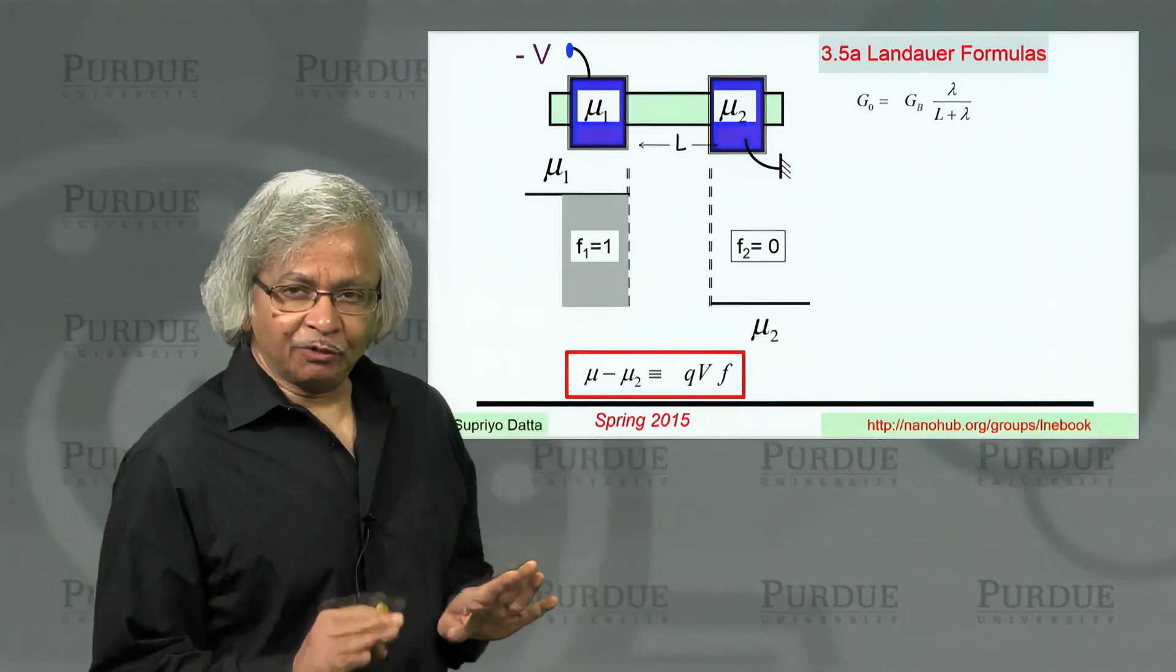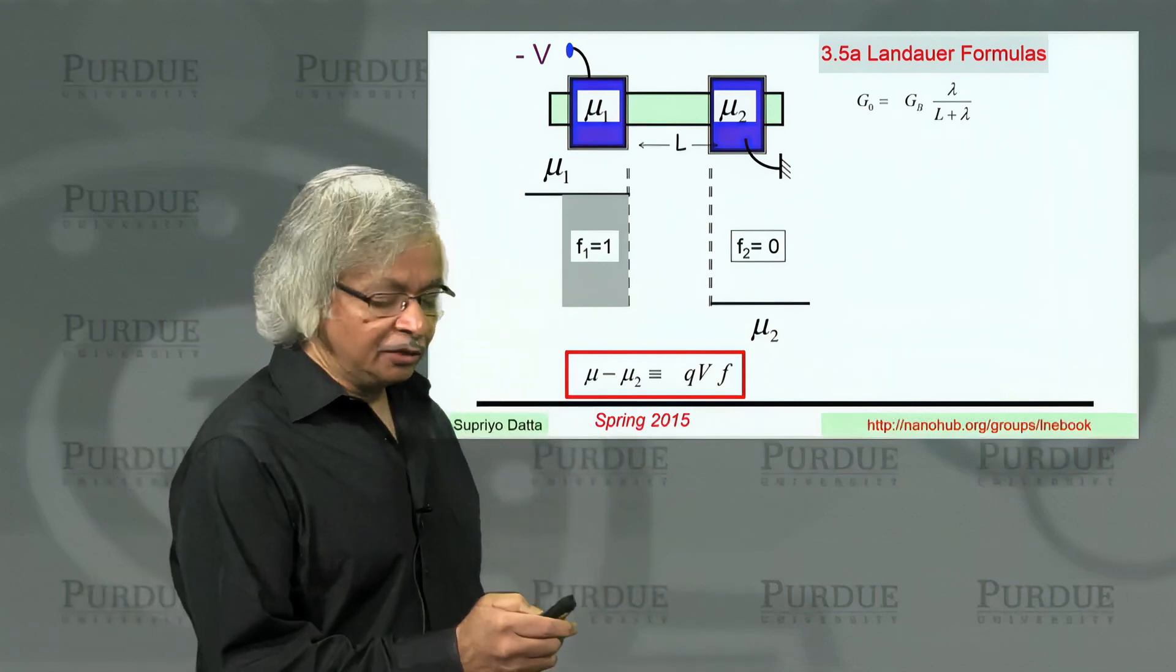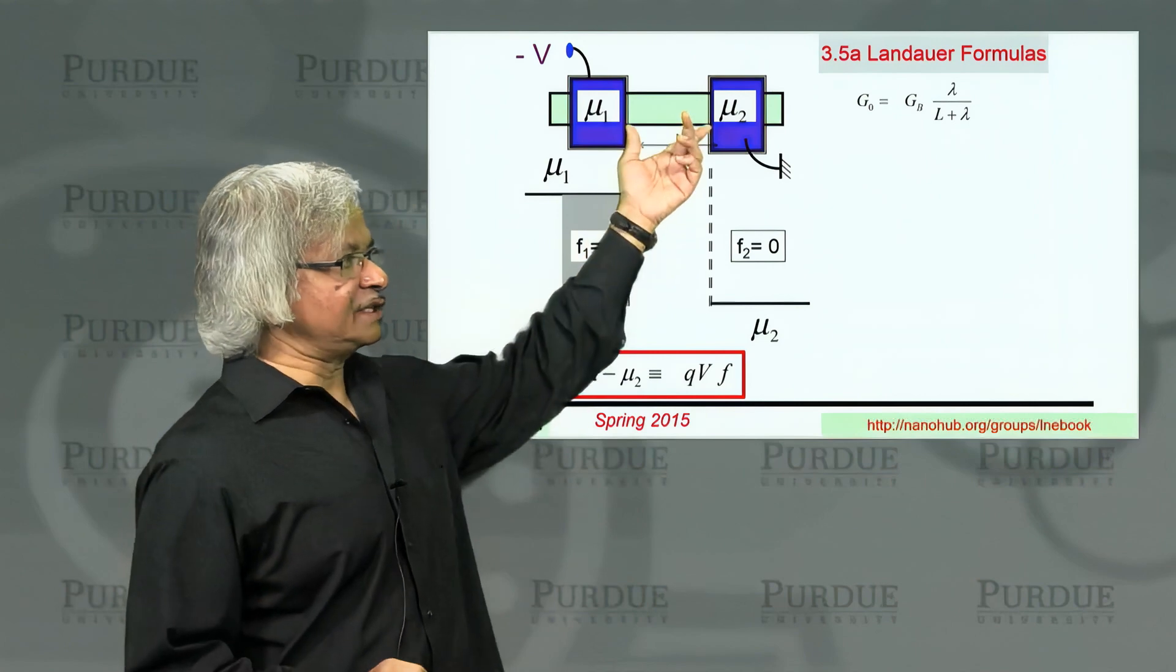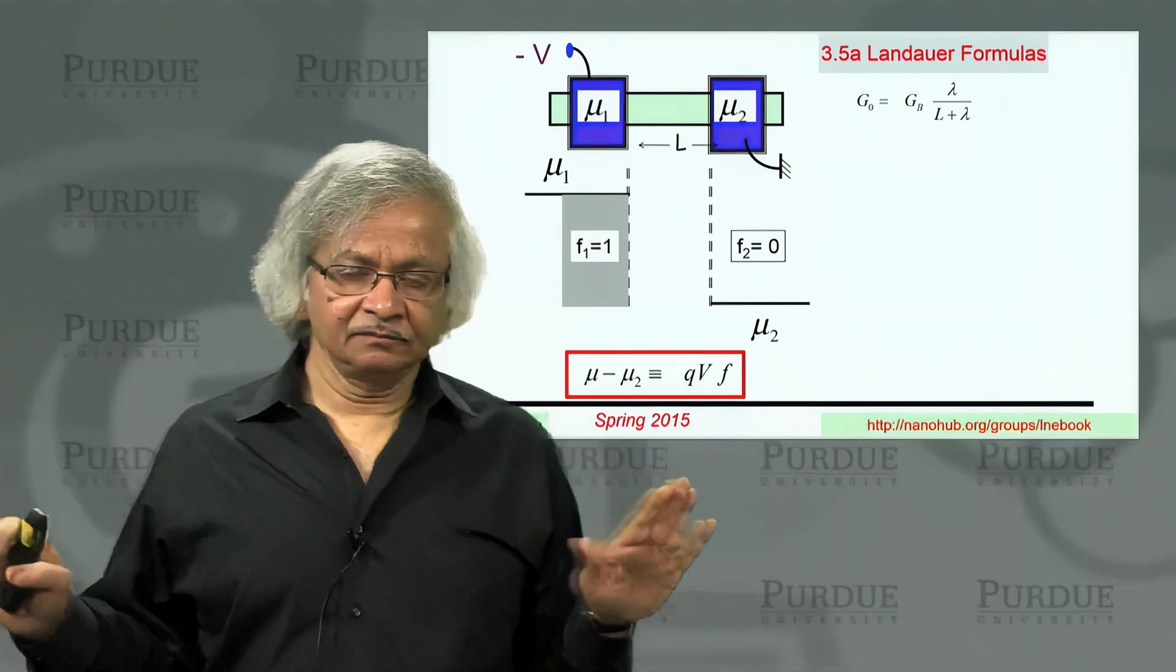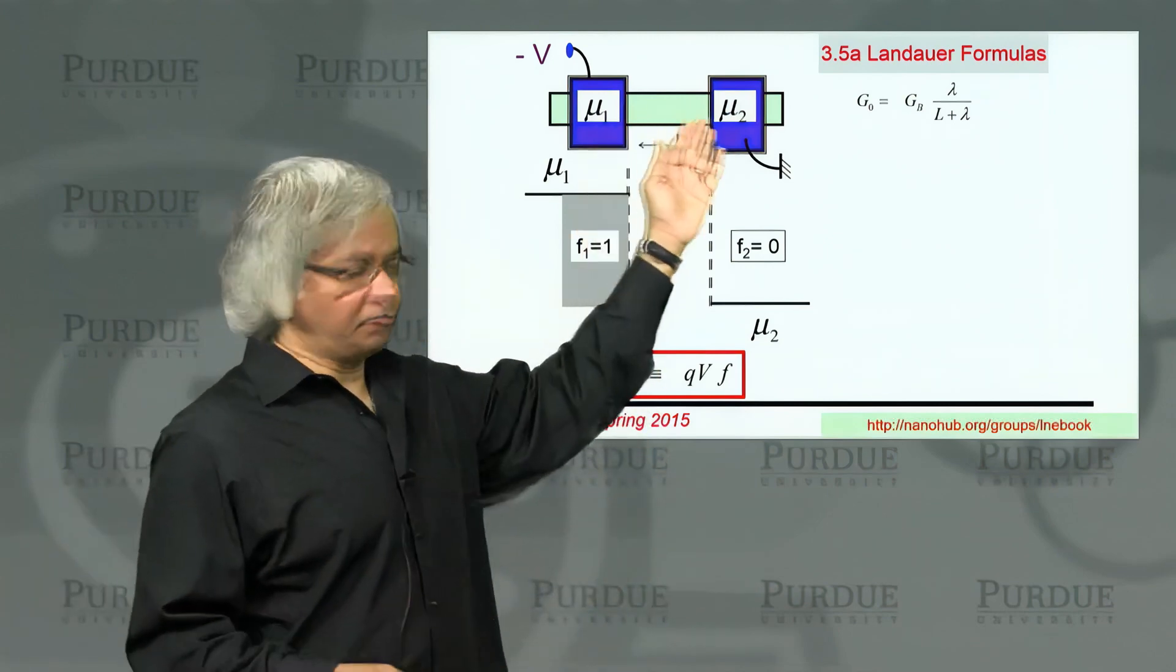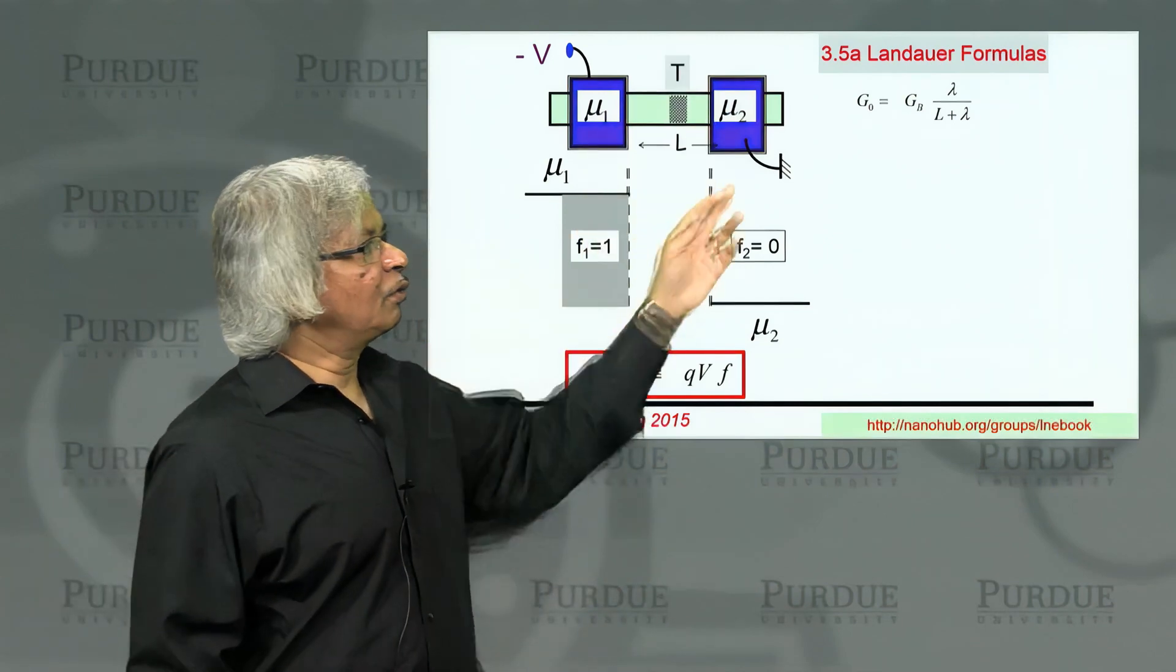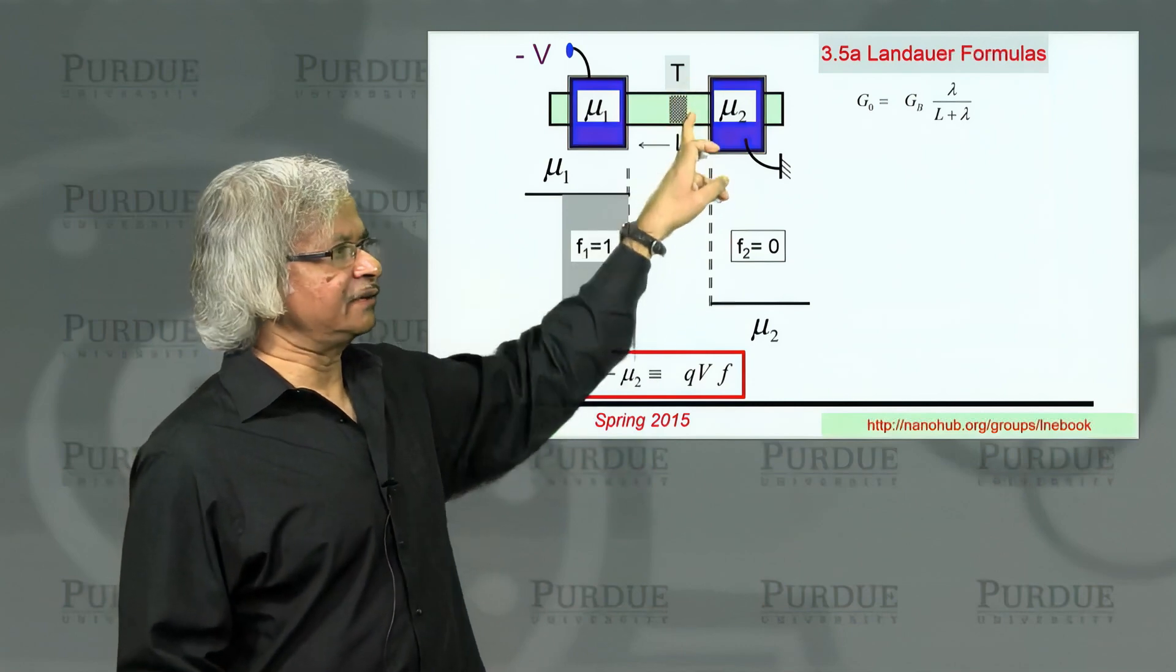Now in this lecture, what we'll be considering is a localized scatterer. That is, the way we'll think is as if the channel is basically ballistic, with no scattering anywhere except for one point where there is some scatterer.